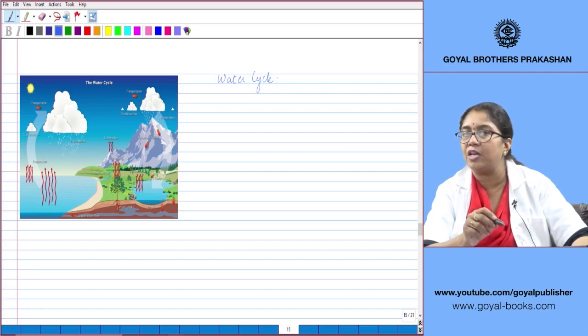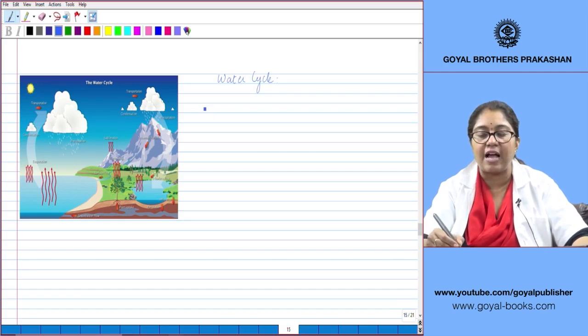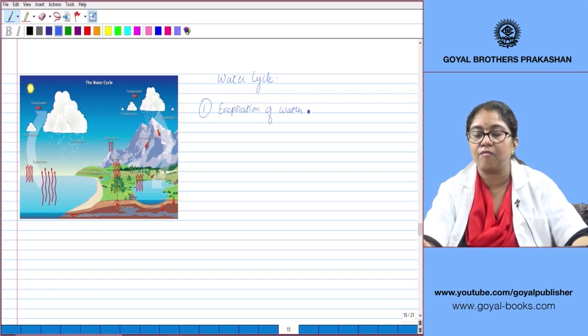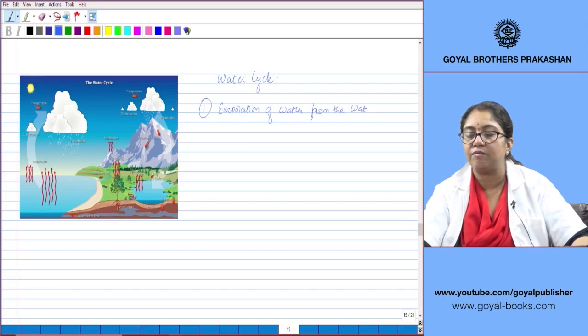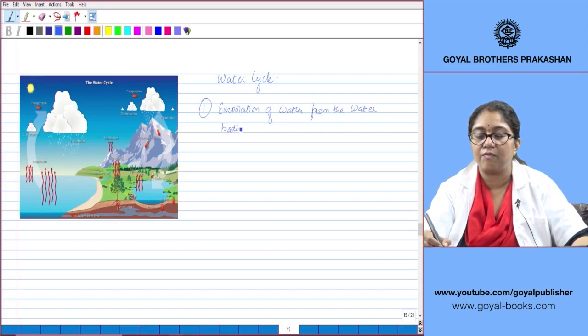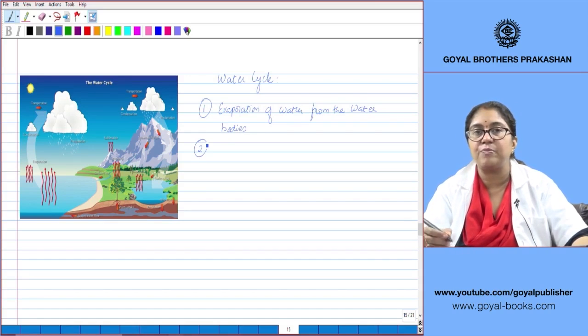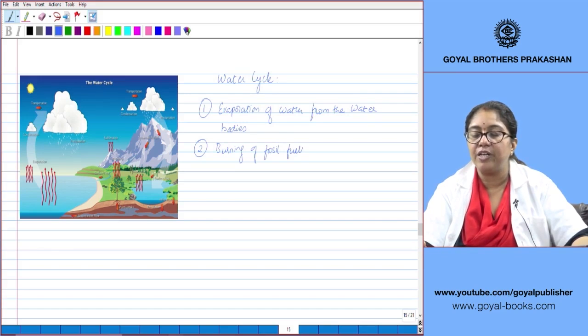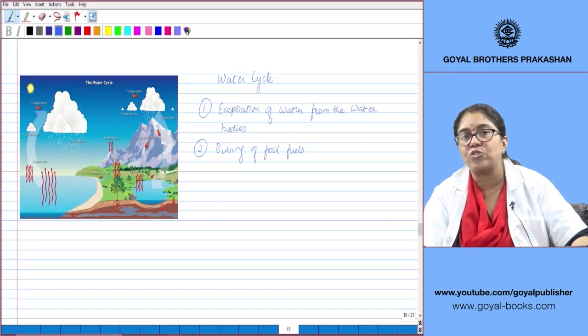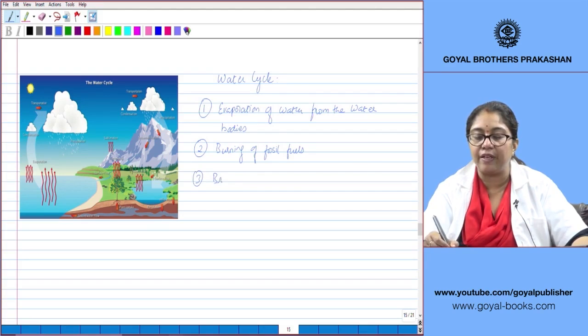Water vapor is added to the atmosphere: one, by evaporation of water from the water bodies. Number two, by burning of fossil fuels, which releases two gases—water vapor and carbon dioxide.